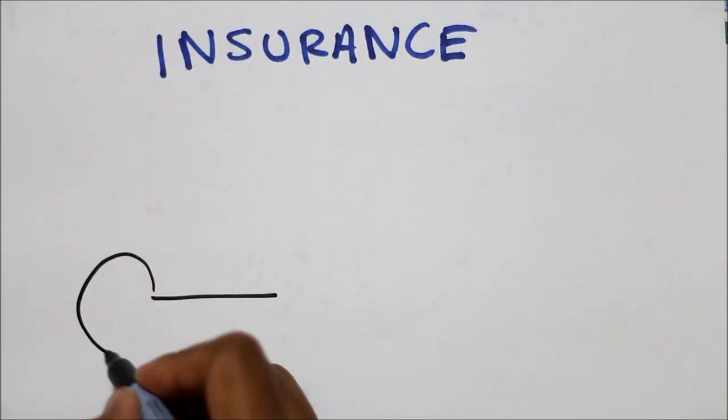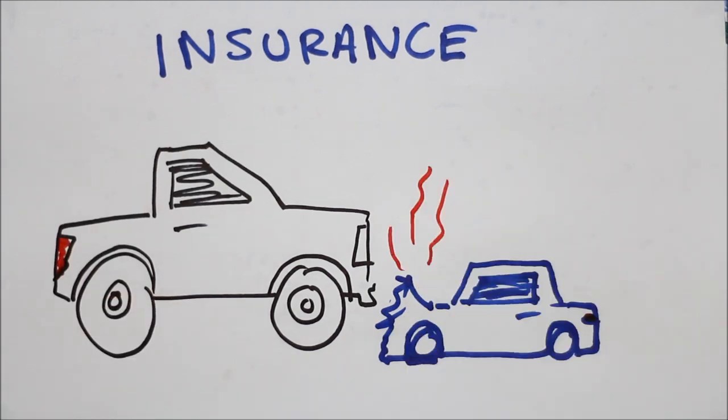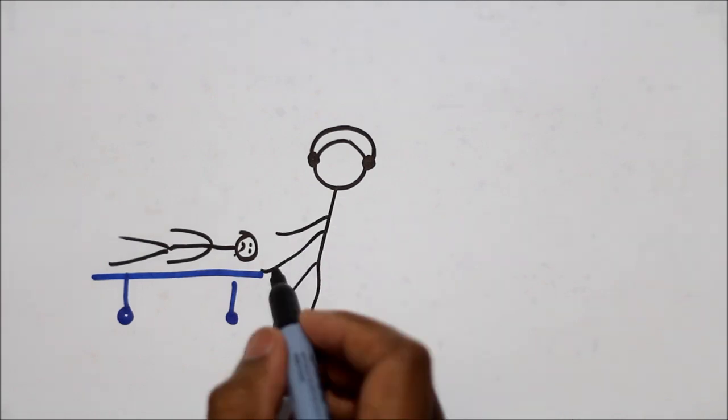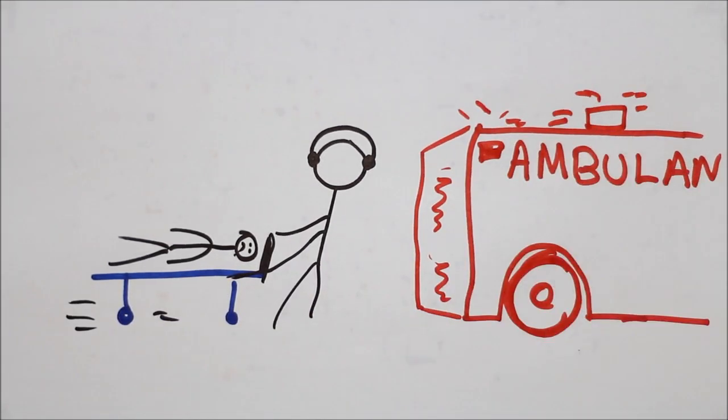Insurance should be a huge factor in what car you buy. Get a quote before settling on a particular make or model. For example, smaller cars have a higher bodily injury in a collision and thus a higher collision rate, therefore offsetting any fuel savings.